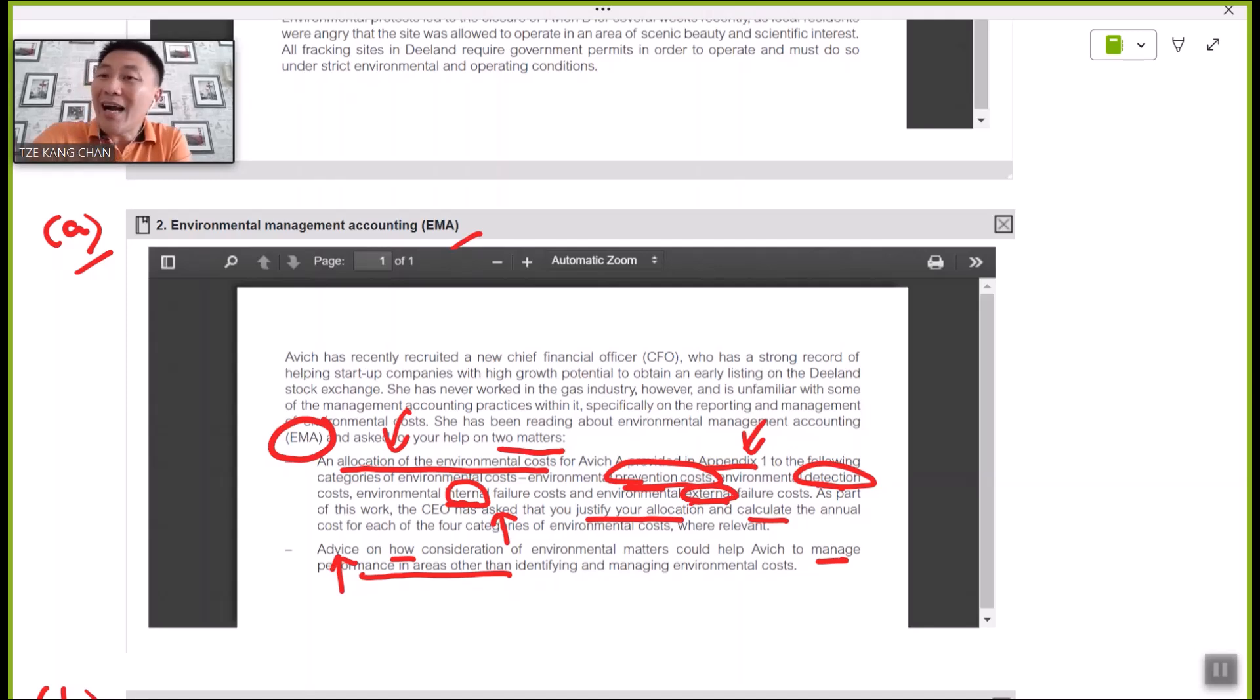Apart from these headings of the cost classifications given, here are your tasks. You need to justify the way that you classify and locate each and every cost, and then you have to determine the value of these costs under each of the four categories as relevant. That is a fairly straightforward task for part A of the requirement.